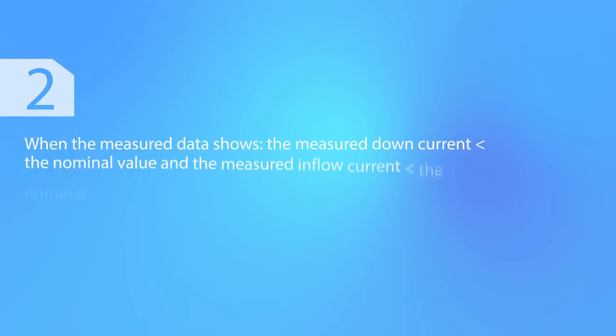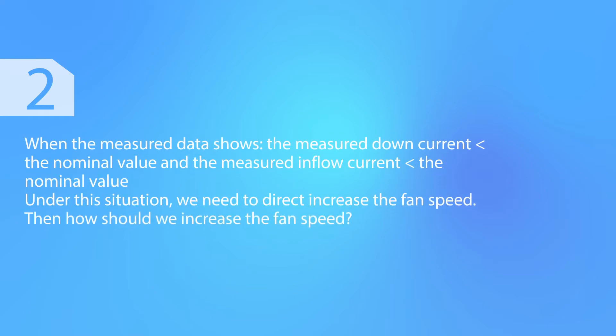When the measured data shows that the measured down current is below the nominal value and the measured inflow current is also below the nominal value, we need to directly increase the fan speed. How should we increase the fan speed?